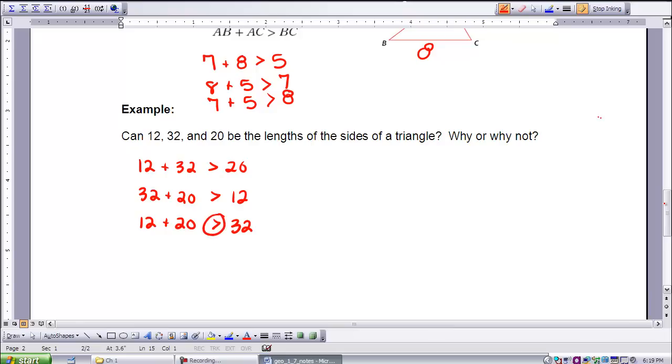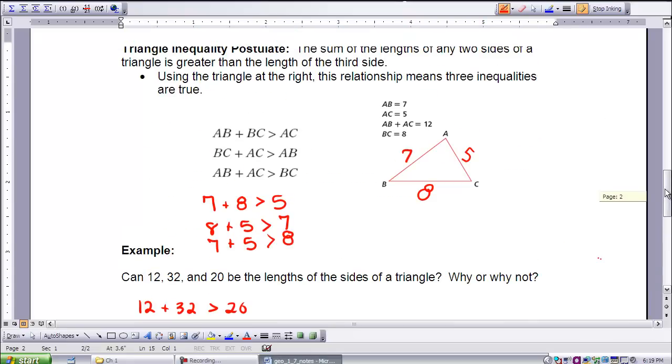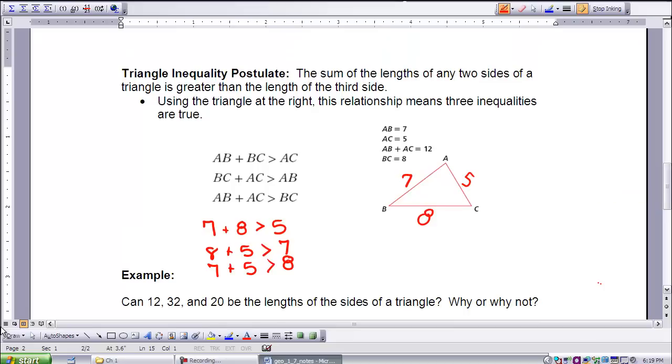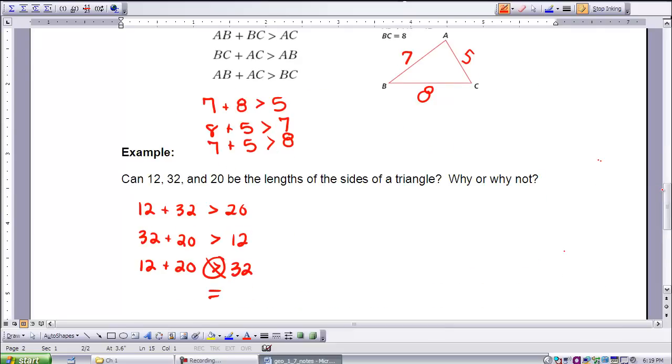No, it's not. It is equal to 32. So that does not follow our Triangle Inequality Postulate that states that the sum of the lengths of any two sides of a triangle is greater than the length of the third side. That does not satisfy the postulate, so therefore this is not a triangle.